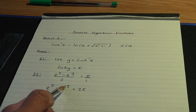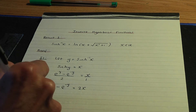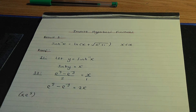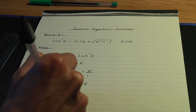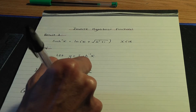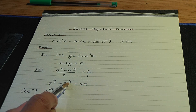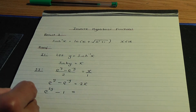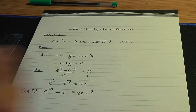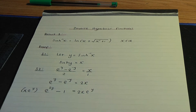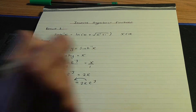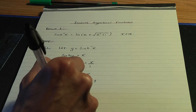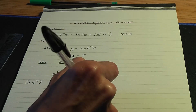I'm going to get rid of this negative power by multiplying the whole equation throughout by e to the y. If I multiply throughout by e to the y, we get e to the two y minus one — since e to the y times e to the minus y is e to the zero, which equals one — and that equals two x e to the y. Now, moving all terms to the left hand side, we get e to the two y minus two x e to the y minus one equals zero.